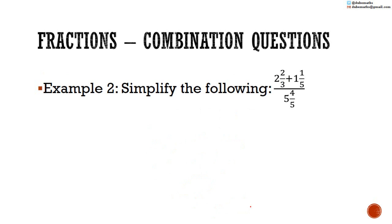Again, we have to use BODMAS. You would be forgiven for thinking that you need to divide before you multiply, because the sum reads 2 and 2 thirds plus 1 and 1 fifth divided by 5 and 4 fifths, and this line in a fraction means divide. But in actuality, you need to treat the numerator as one unit and the denominator as one unit, so there should be brackets around both the numerator and denominator. How the sum should be interpreted is: 2 and 2 thirds plus 1 and 1 fifth, in brackets, divided by 5 and 4 fifths.